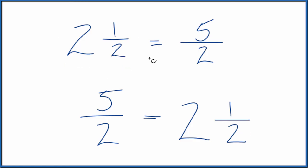So in answer to our question, the mixed number 2 and 1 half equals the improper fraction 5 halves. This is Dr. B. Thanks for watching.